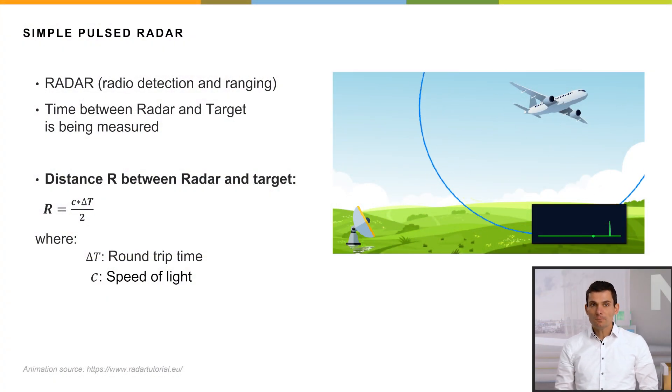So we see this is a simple pulsed radar. It measures the distance it takes for a signal to travel between the radar system, getting reflected from the target, and traveling back. By knowing this time, the distance r can be calculated, as we see it on the left-hand side.